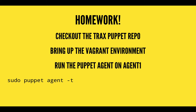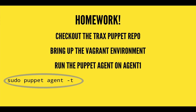Your homework this time is to check out the Trax Puppet repo, do a git checkout to your local workstation, go into the Vagrant folder, and bring up the Vagrant environment. Then log into Agent 1 and do a manual Puppet run to ensure that everything came up and is running correctly. Building on that on Friday, we're going to create our own Puppet module from the repo and push it out to our agent on our Vagrant images. The command for running the Puppet Agent manually is 'sudo puppet agent -t'.